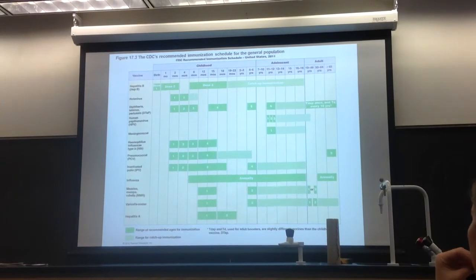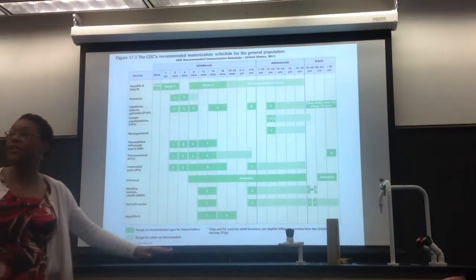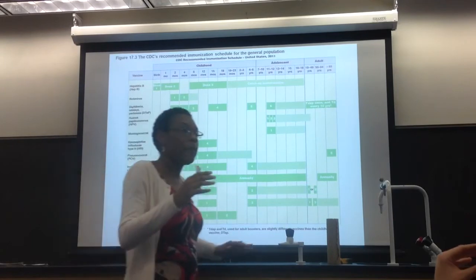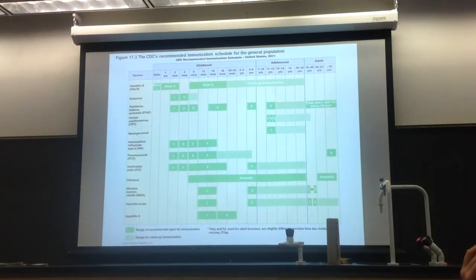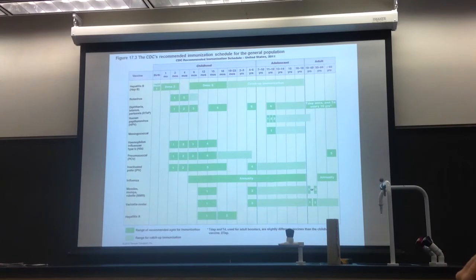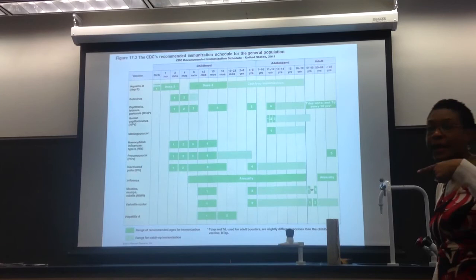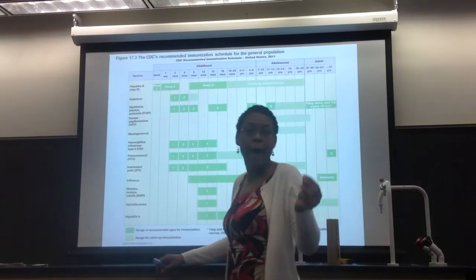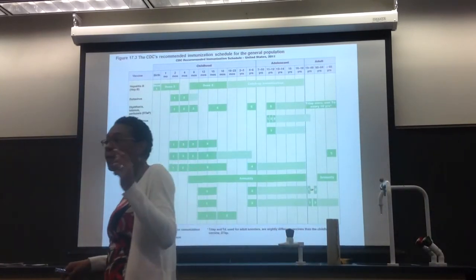This is the CDC's recommended immunization schedule. You don't have to follow it, but the take-home message is: if everybody follows this schedule and gets their vaccinations on time, we develop something called herd immunity.